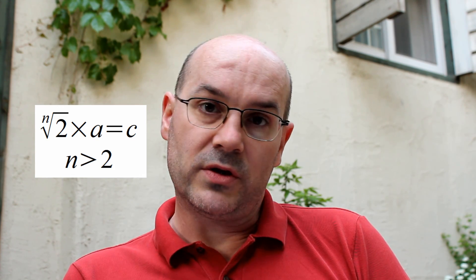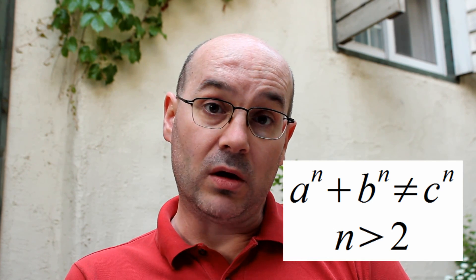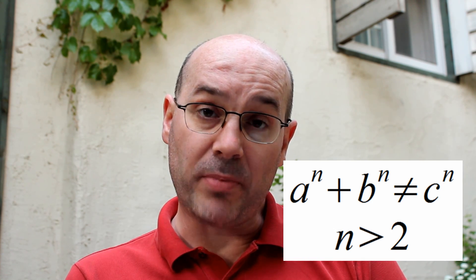In other words, we have proved that a to the power of n plus b to the power of n is never equal to c to the power of n, as soon as n is greater than 2. So, do you think this is a simple proof of Fermat's last theorem, or do you think there's something wrong in it? I hope you enjoyed this video, and see you next time!